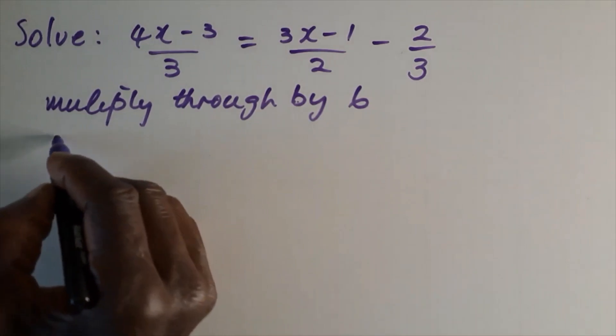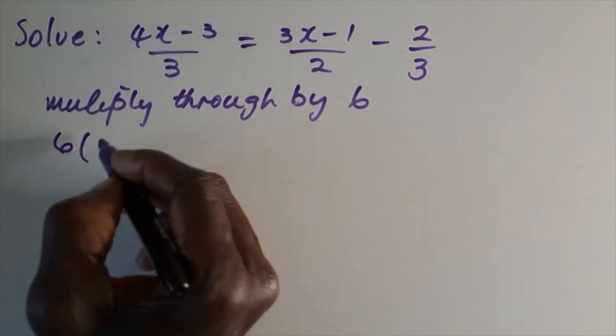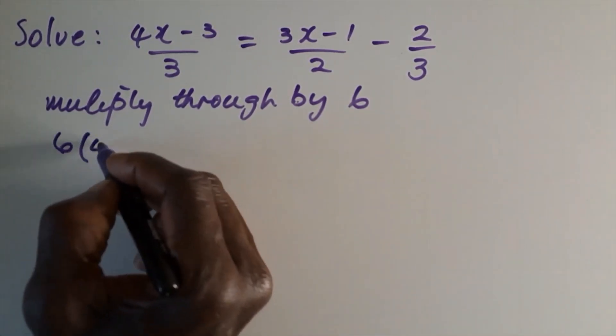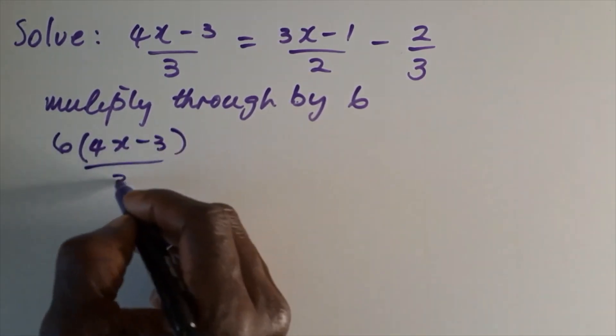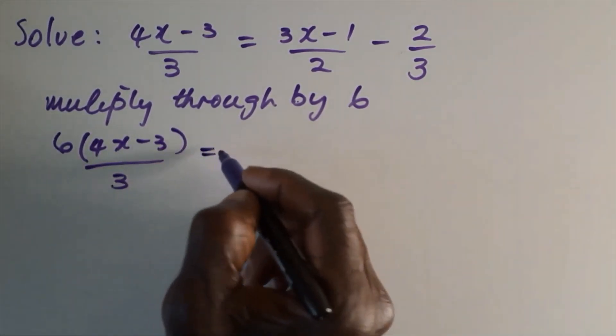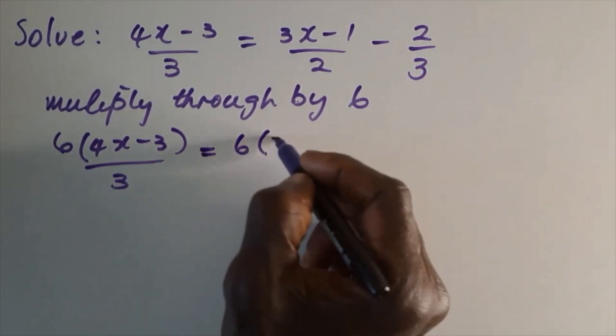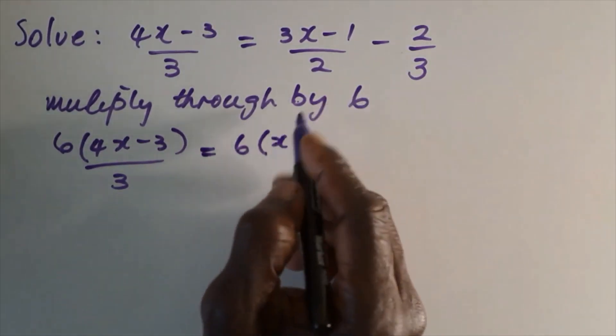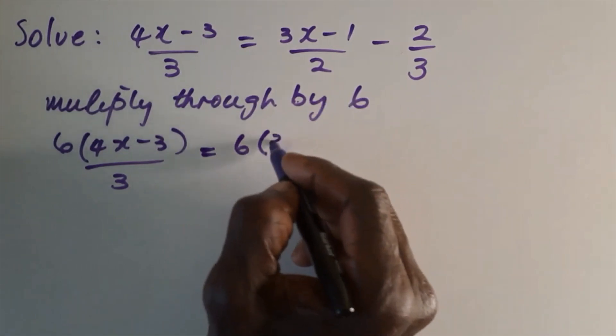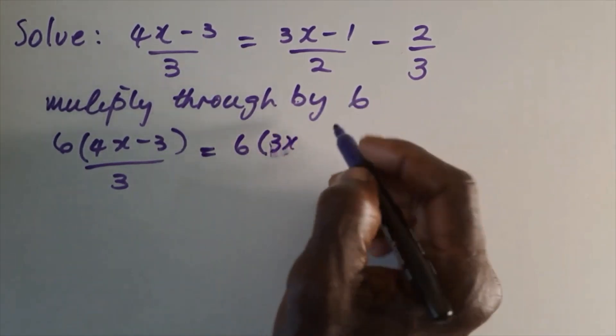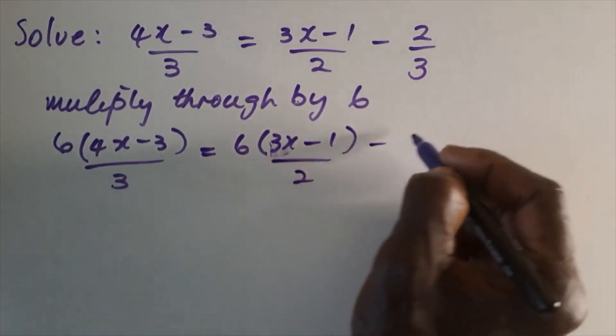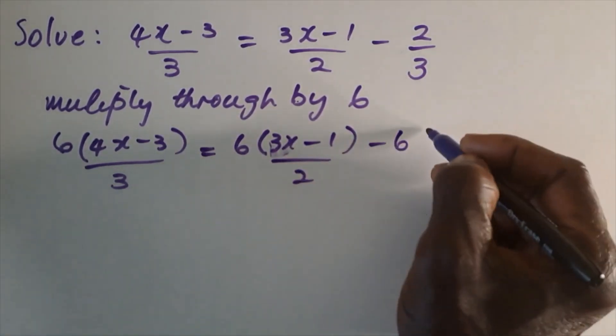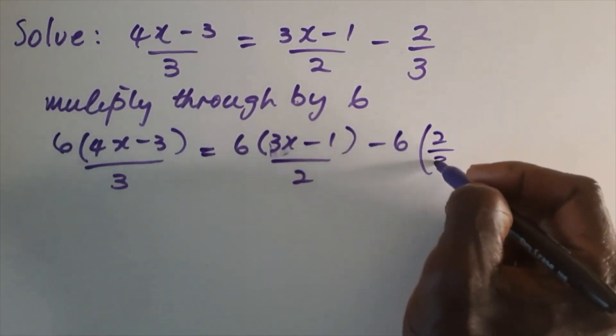So we'll write what it looks like when we multiply by 6. We have (4x-3)/3 equals 6 times (3x-1)/2 minus 6 times (2/3).